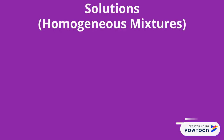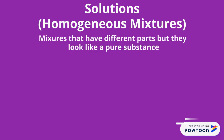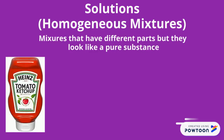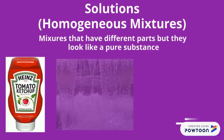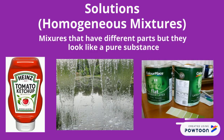Solutions or homogeneous mixtures are mixtures that have different parts, but they look like a pure substance. For example, ketchup, rainwater, and paint are made of multiple things, but it all looks like one thing because the particles are evenly mixed together.